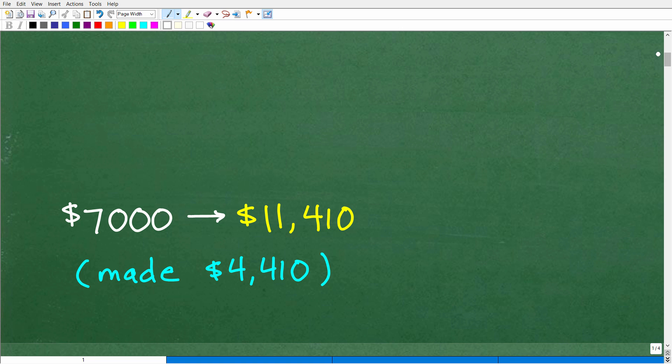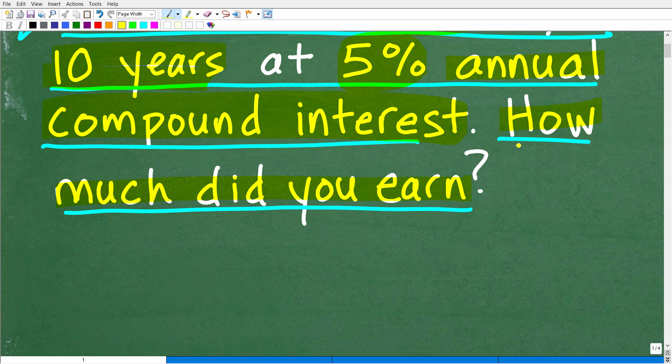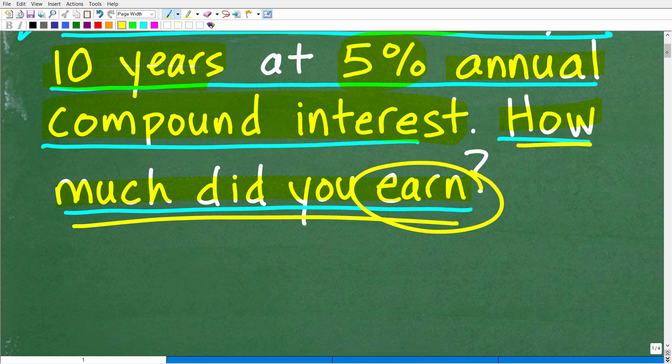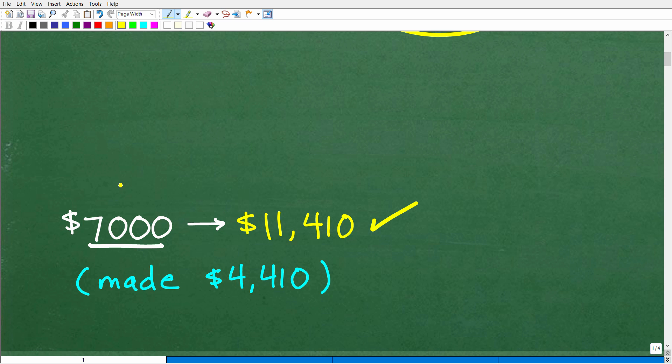The correct answer is the following. So we took this $7,000 and in 10 years, investing at 5% annual compound interest, our investment is worth after this 10 years $11,410. So how much money did we earn on this investment? That is the question, right? Not how much is the investment worth at the end of those 10 years. How much money did we earn? Well, we already had the $7,000 before we even put it into this investment.